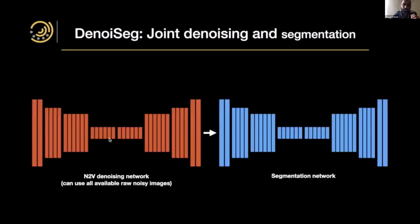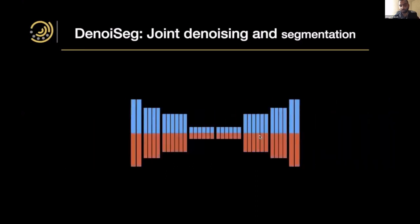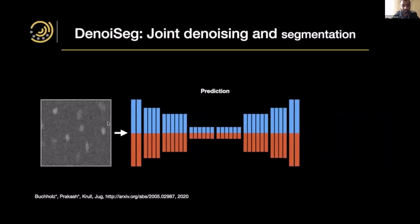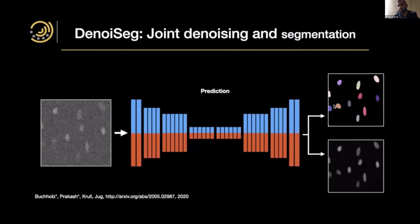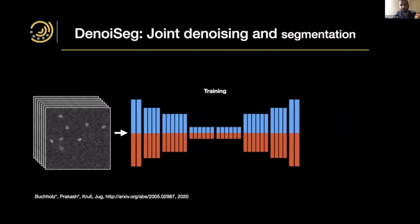Our idea: instead of discarding all available raw noisy images for which we have no ground truth, can we use them somehow? Noise2Void only needs raw noisy images for training — which are usually available in abundance. If we could use all our noisy images to train the denoising network and then combine features learned via denoising with a segmentation network, we may be able to segment better even with fewer annotations. We combine these two tasks into one single network called DenoiseSeg, trained jointly. During prediction, it takes a noisy image and produces both a denoised image and instance segmentations.